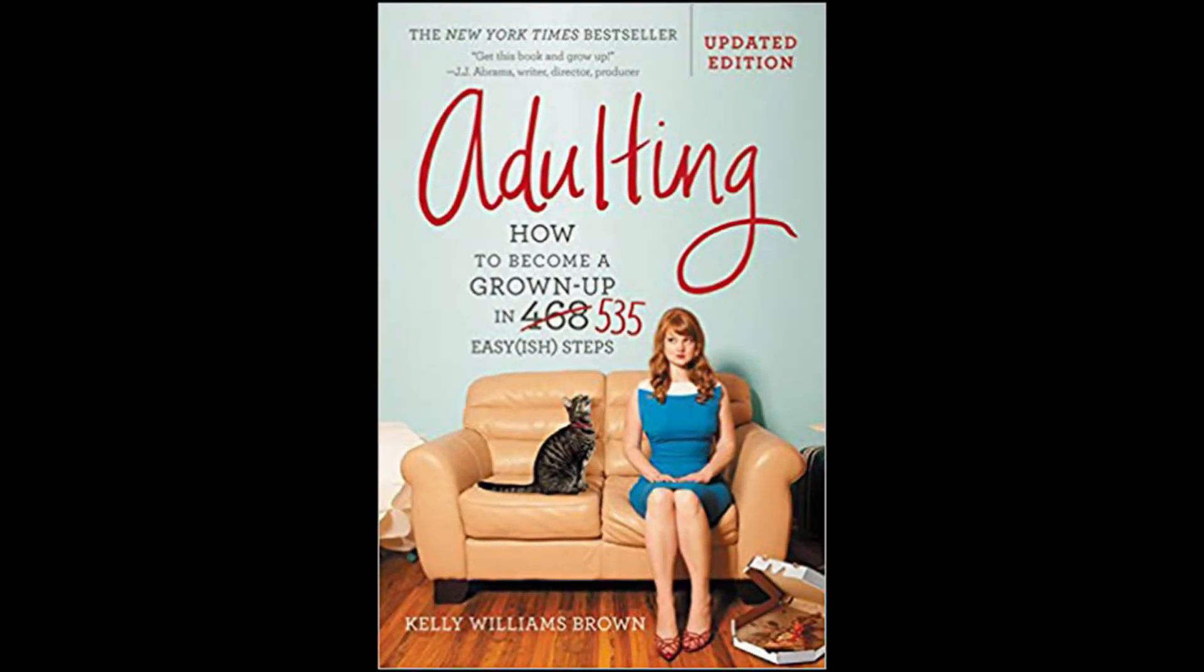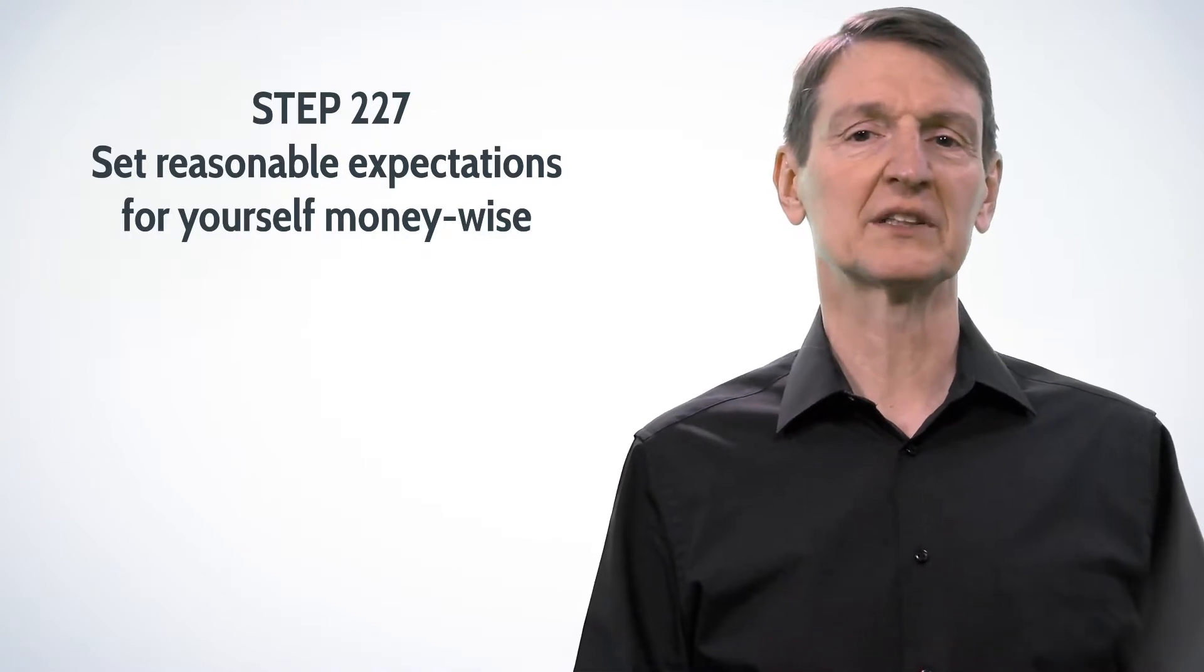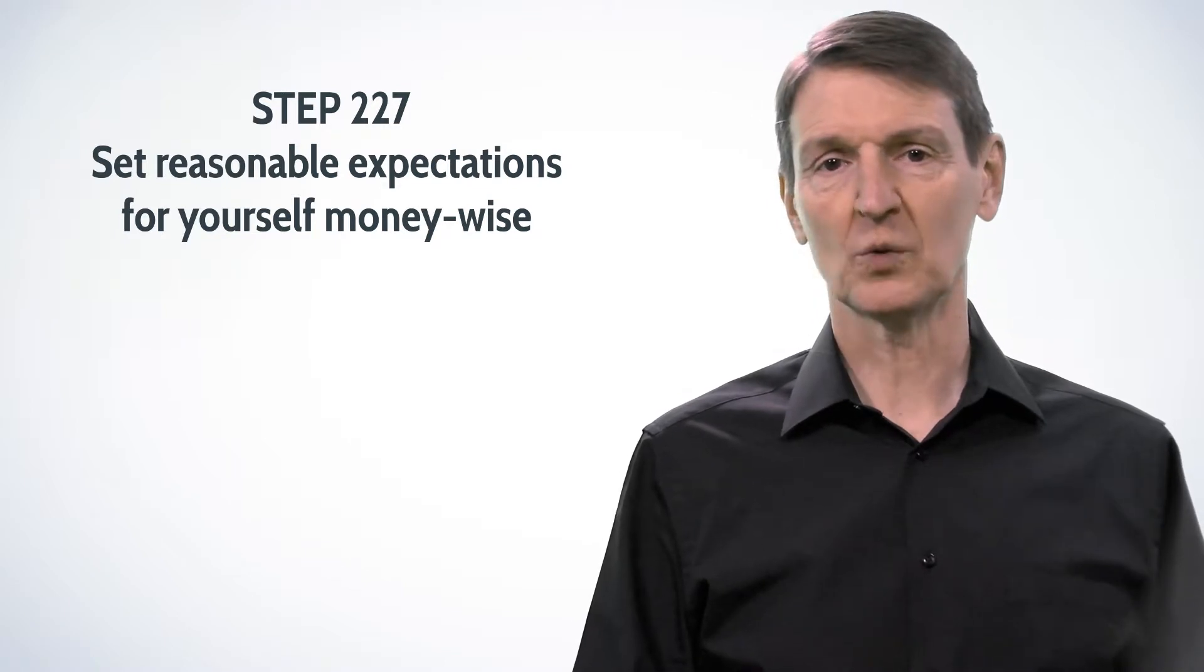Now, there was a book came out in 2013 by Kelly Williams Brown called Adulting. She goes over tons of really cool stuff, but she has an area on money. And step 227 says, set reasonable expectations for yourself money-wise. And in that particular one...